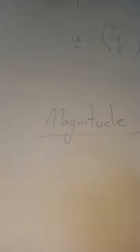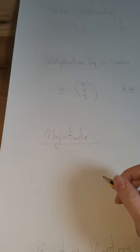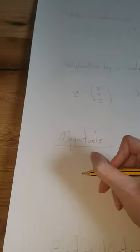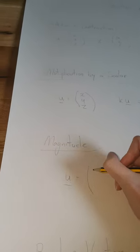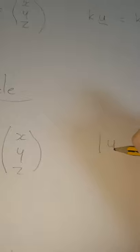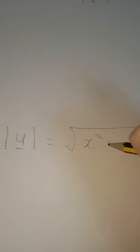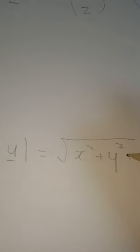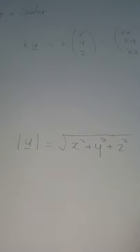When we worked out the magnitude of a two-dimensional vector, I showed you how we used Pythagoras' theorem. That theorem can be used in three dimensions too. If I have a vector u with coordinates x, y, z, the magnitude of u — denoted with those two lines around u — is simply the square root of x squared plus y squared plus z squared.